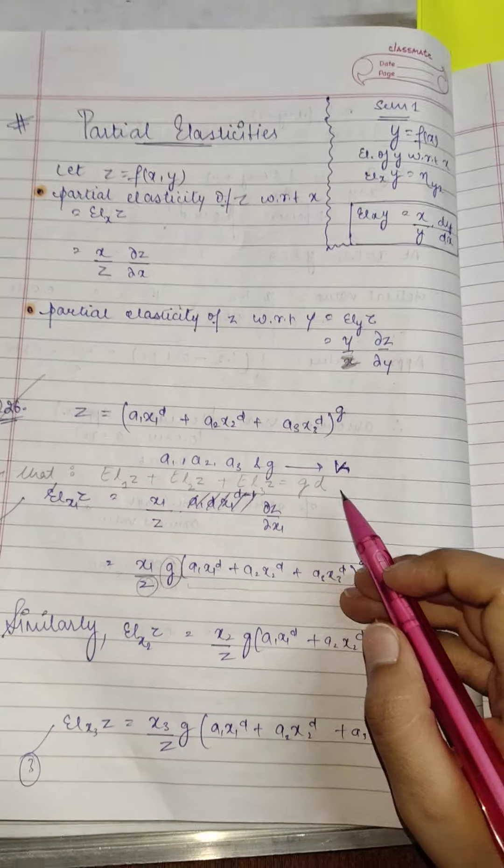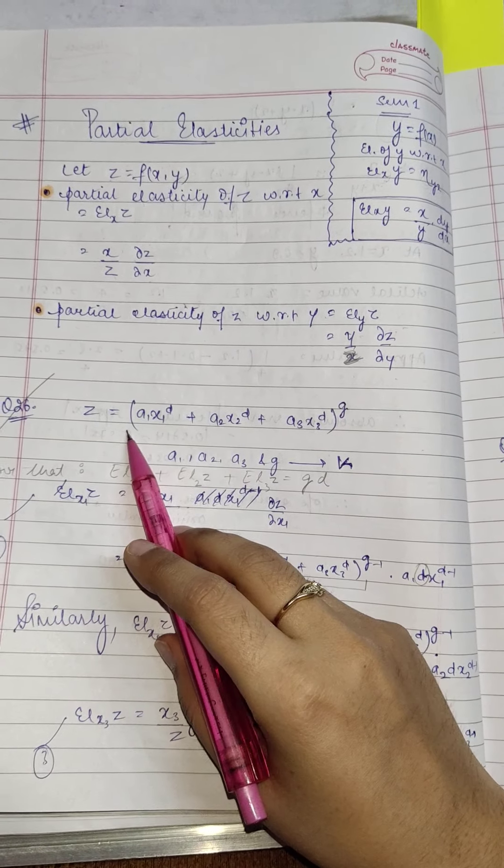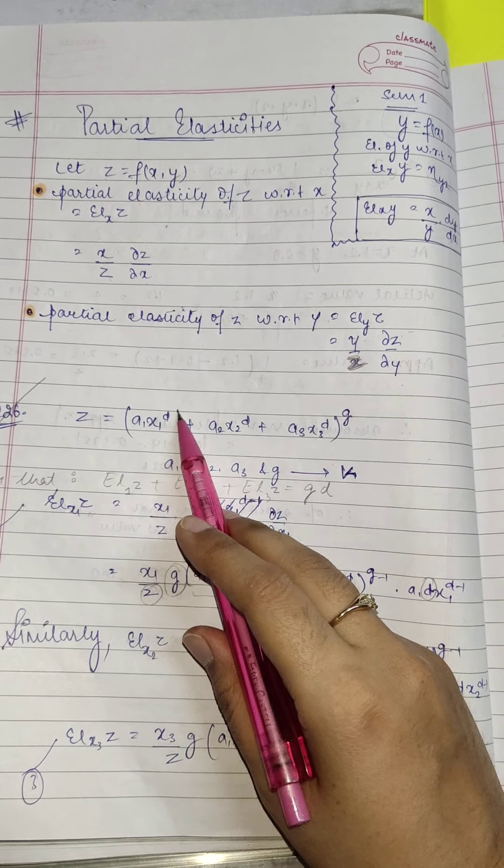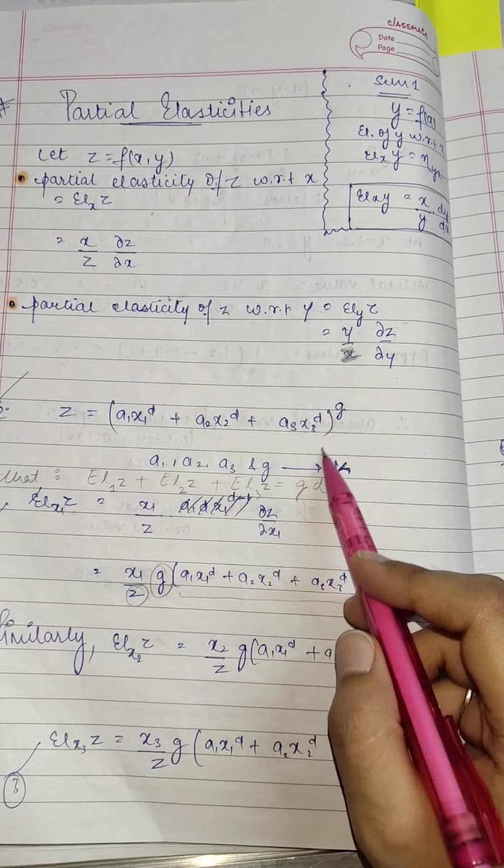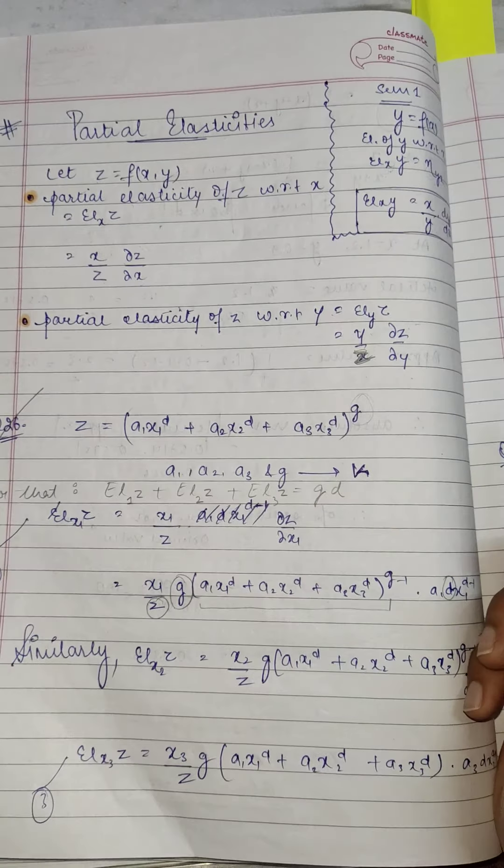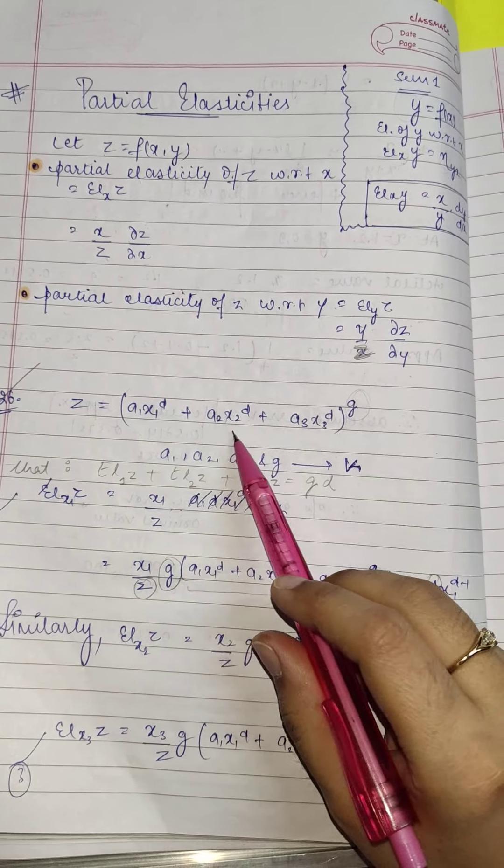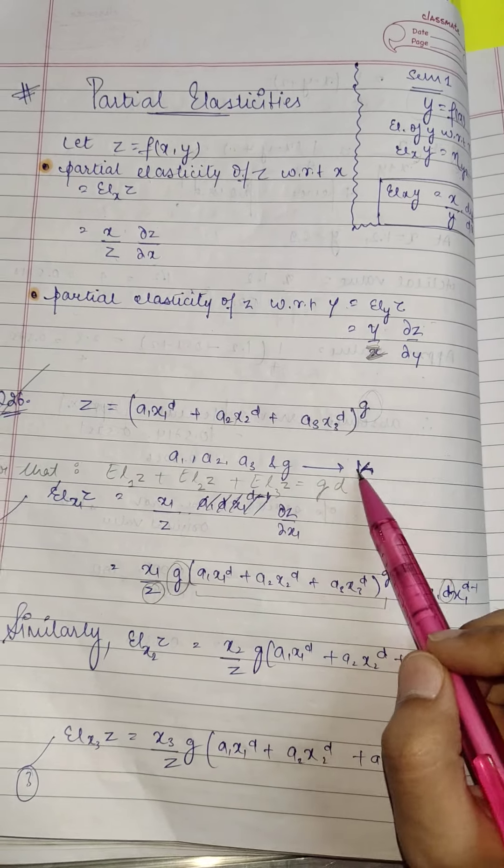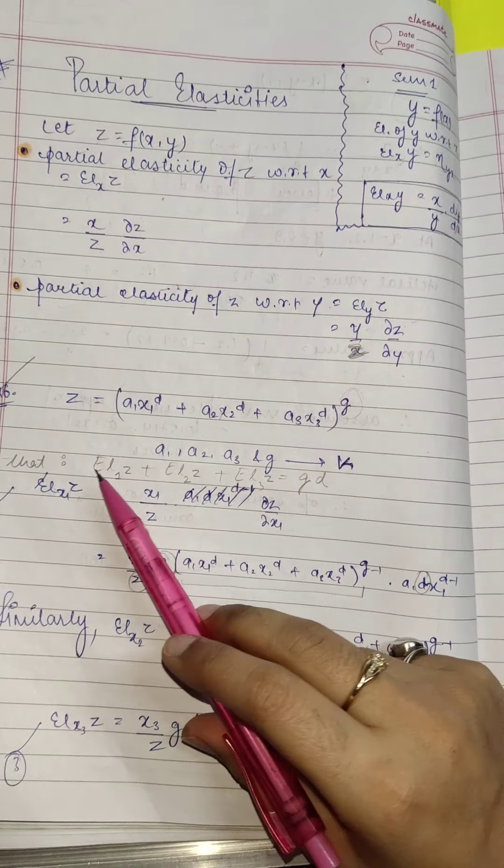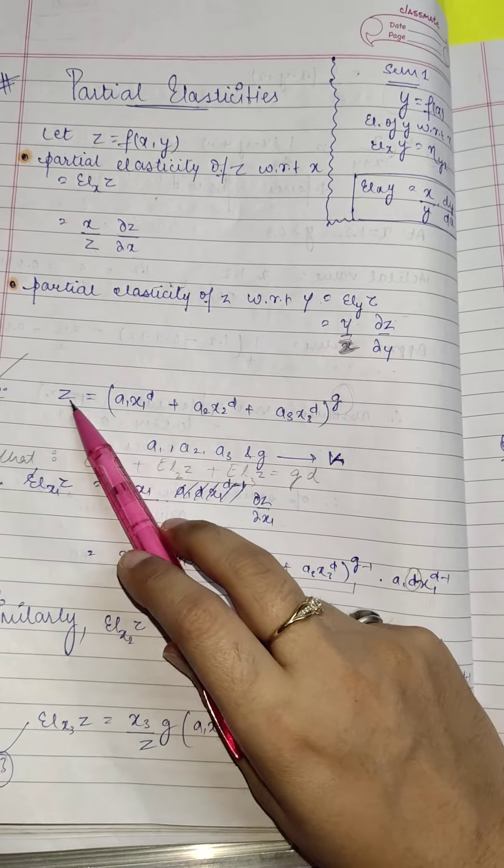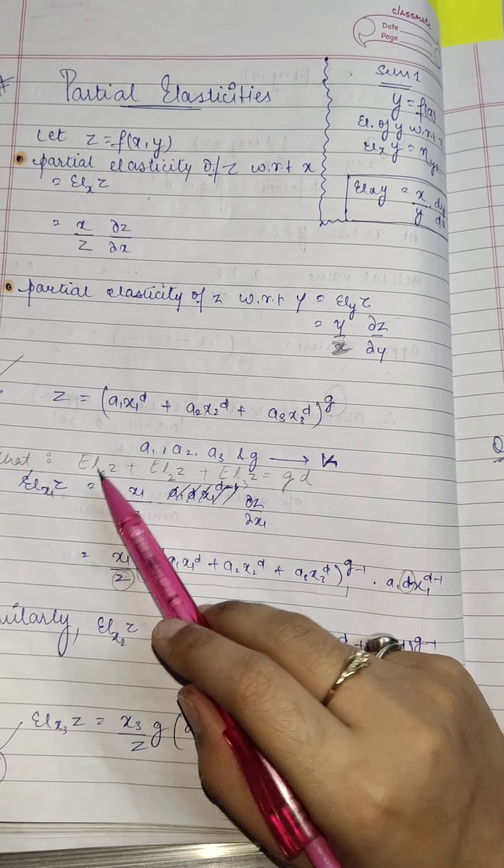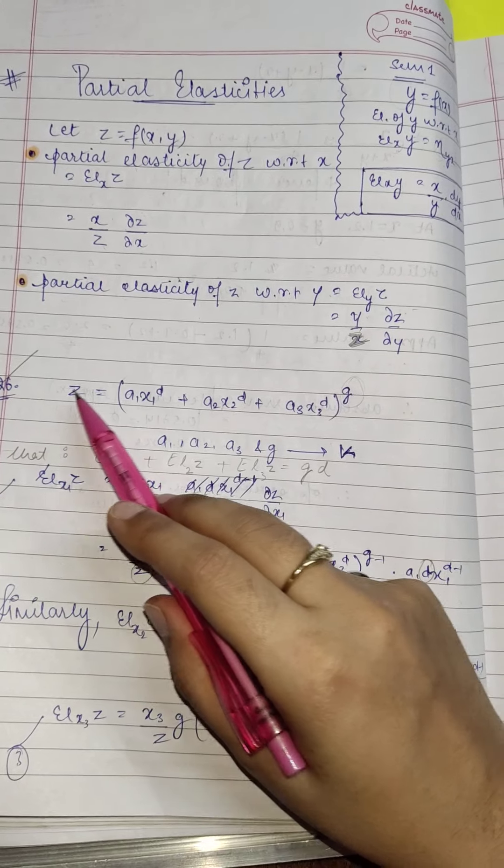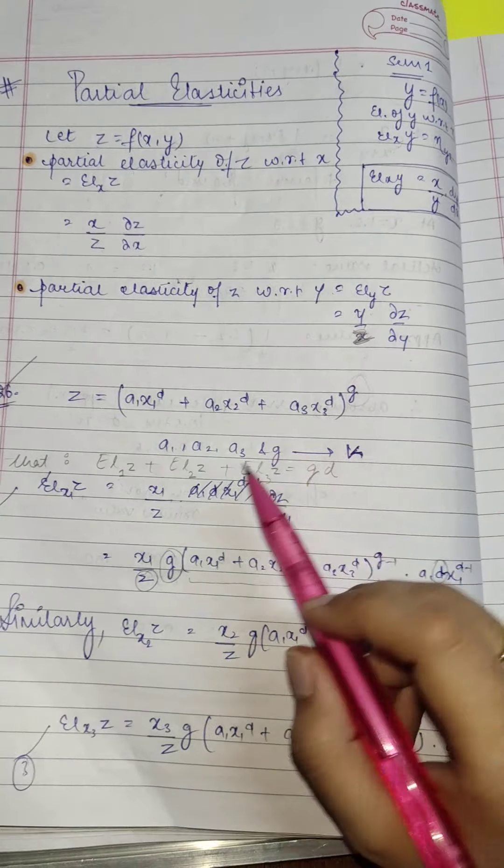So let's do a quick question on it. You've been given that z equals a1·x1^d + a2·x2^d + a3·x3^d, and the whole raised to the power g, where a1, a2, a3, and g are constants. So you have to prove that elasticity of z with respect to the first argument, that is x1—so z is a function of x1, x2, and x3—